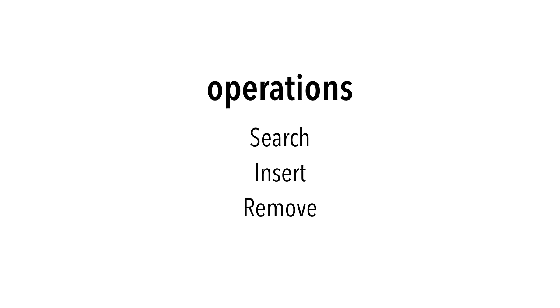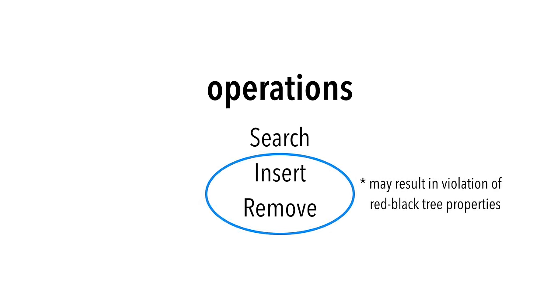Let's talk about what you can do with red-black trees. There are three main operations: search, insert, and remove. Inserting and removing items change the structure of the tree and may result in a violation of the red-black tree properties we outlined before.